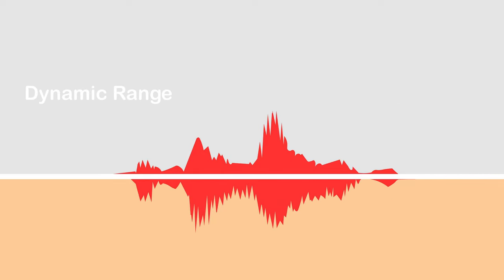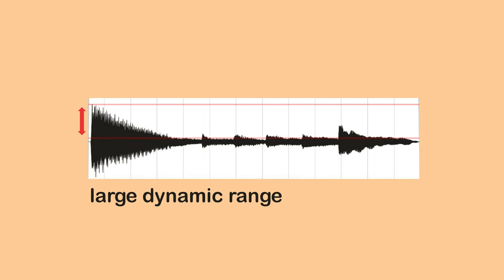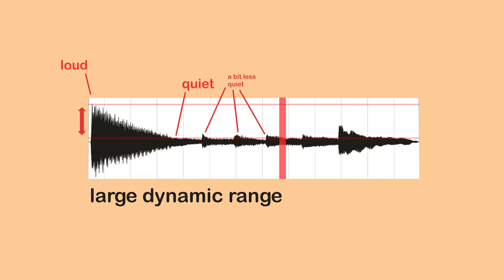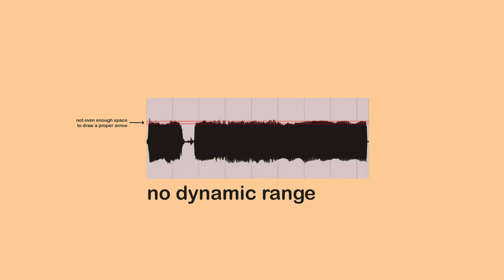So why do we compress? Well, for a lot of reasons actually — both practical and also creative, but more on that later. The main reason we use compressors is in order to control and reduce the dynamic range of a signal. Dynamic range is the difference in volume between the loudest parts and the quietest parts of a recording. This piano part, for instance, has a large dynamic range, while this bad guitar riff doesn't.